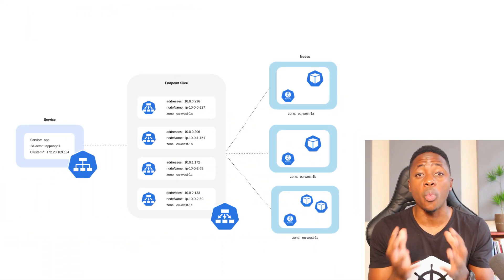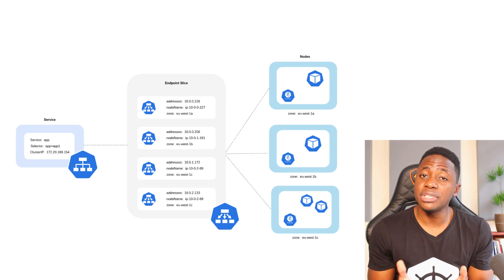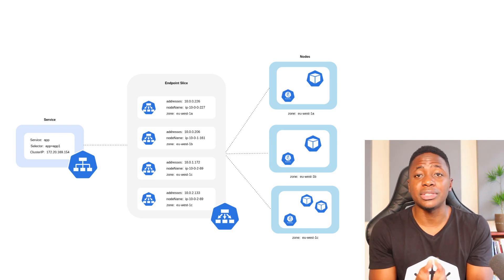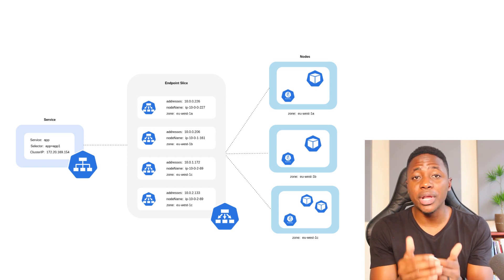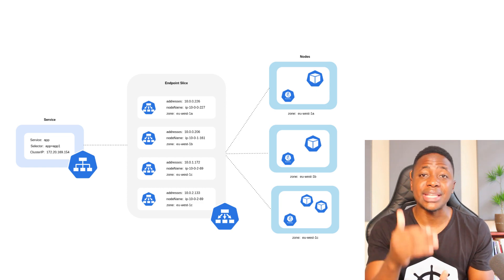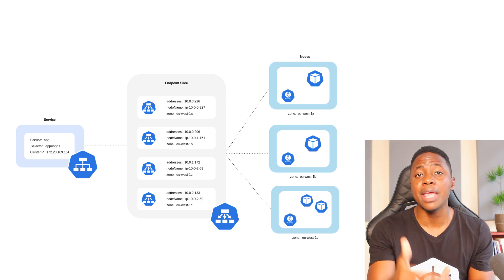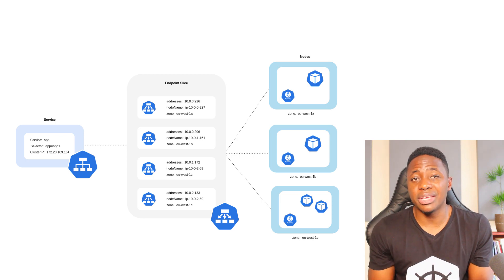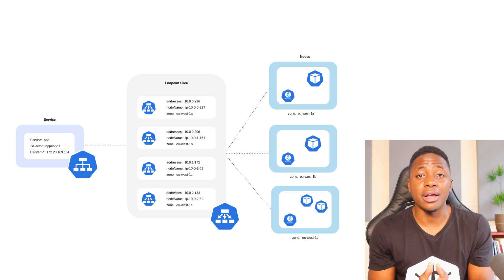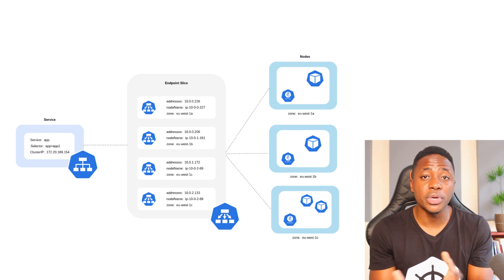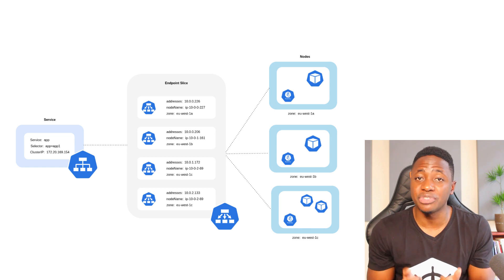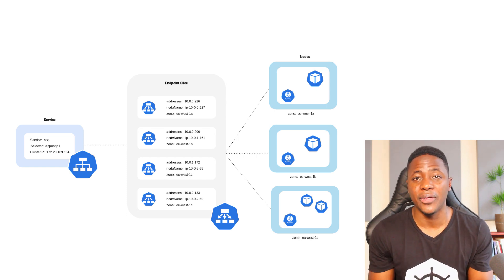When looking at Topology Aware Hints, it's important to understand how services, endpoint slices, and the Kube Proxy work together when routing traffic. Services are load balancers that route traffic to pods — a network abstraction layer that sits in front of pods and has a stable IP. Pods, on the other hand, are ephemeral, and so the list of corresponding IP addresses that should receive traffic is continuously changing.